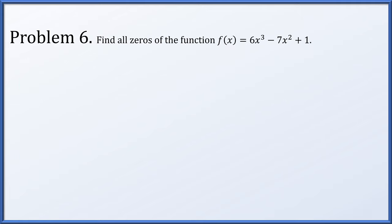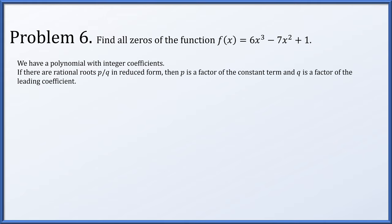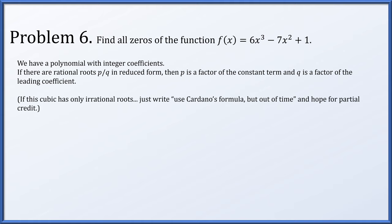Problem 6. Let's find all the zeros of f of x equals 6x cubed minus 7x squared plus 1. Again, all coefficients are integers, so we use the rational roots theorem. If p over q is a rational root in reduced form, p must be a factor of the constant term and q must be a factor of the leading coefficient. Our constant term is 1 and our leading coefficient is 6. The only factors of 1 are plus or minus 1, and the factors of 6 are plus or minus 1, 2, 3, and 6. So we have eight possible rational roots: plus or minus one-sixth, one-third, one-half, or 1. Note that Cardano's formula exists for cubics, but no one uses it — just look it up if you ever need it.